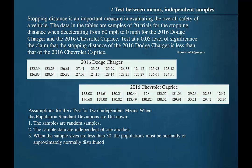There are assumptions that must be satisfied when testing for the difference between means when the population standard deviations are unknown. 1. The samples are random samples. 2. The sample data are independent of one another. 3. When the sample sizes are less than 30, the populations must be normally or approximately normally distributed.